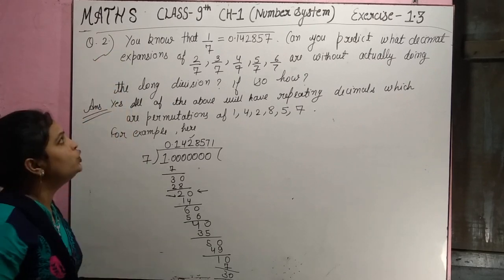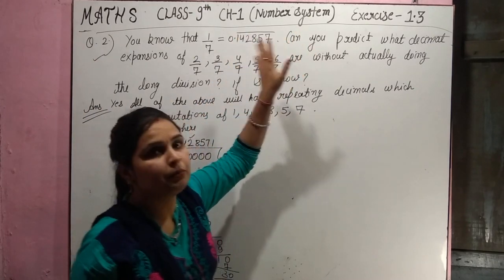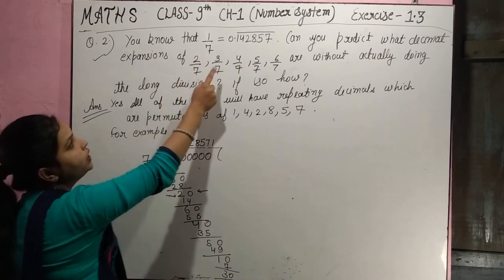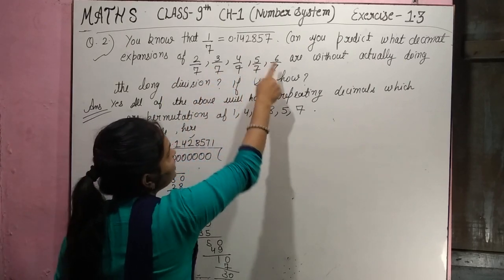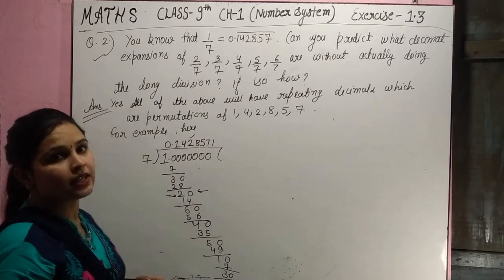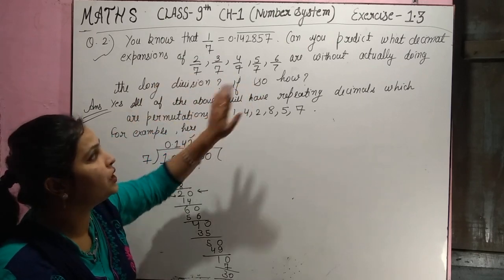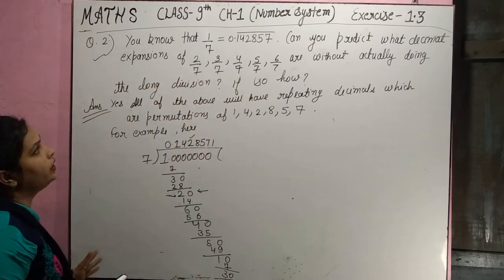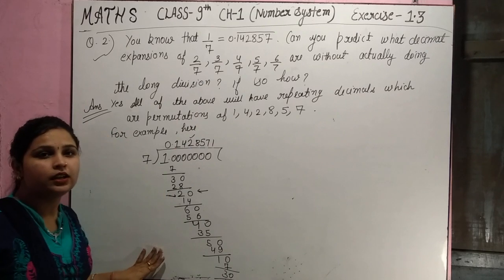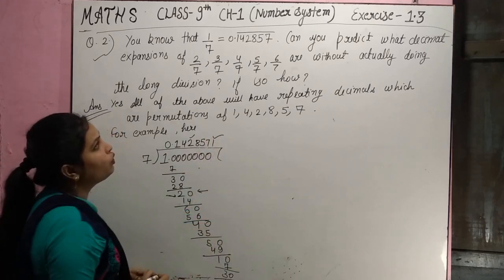The second question states: you know that 1 by 7 is equal to 0.142857 bar, meaning this number repeats. Can you predict what the decimal expansions of 2/7, 3/7, 4/7, 5/7, and 6/7 are without actually doing the long division? The value is given to us. The question asks us to find the values of these fractions without actually dividing.